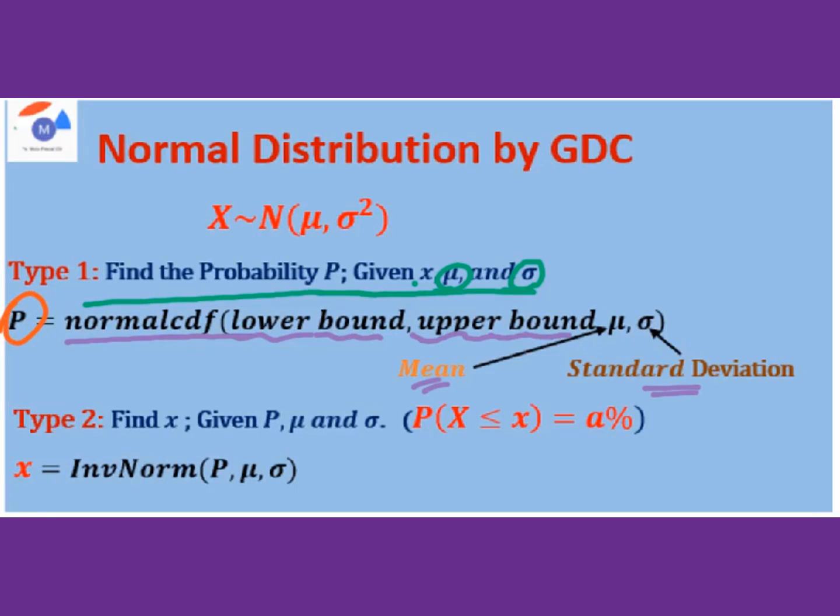For the second type, we are looking for this x. You are given probability, mean, and standard deviation. Remember that you have to make sure this is less than or equal to. Then you use the inverse norm with probability, mean, and standard deviation to figure out this x.